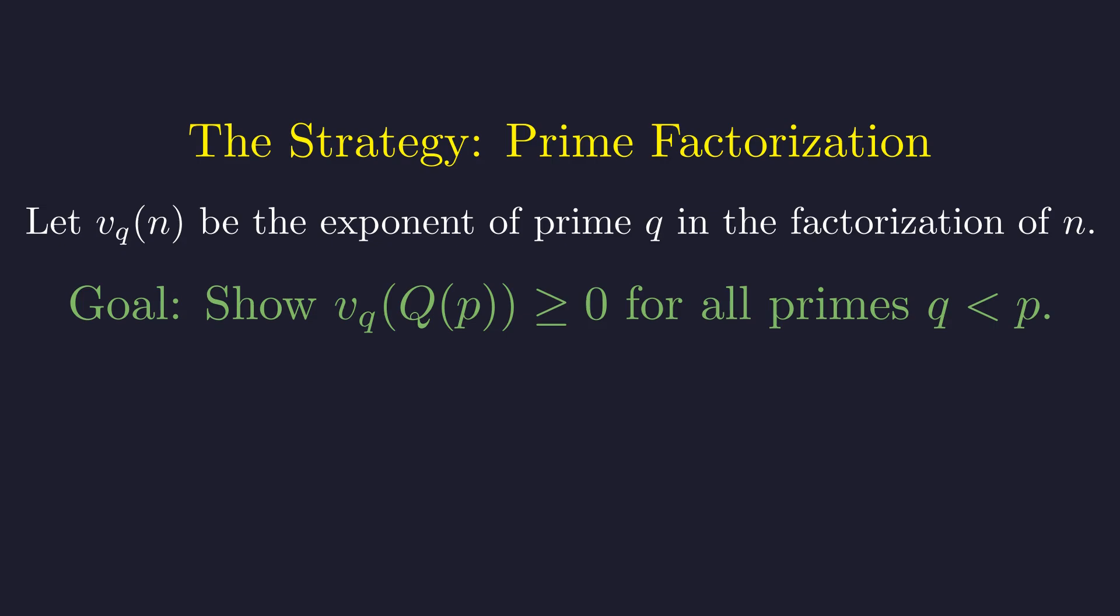If we can do this, then Q(p) has no debt in its denominator—it's genuinely an integer. Notice we only care about primes smaller than p because any prime q that's at least as big as p can't possibly divide any of the numbers 1 through p minus 1, so it contributes nothing to our product.